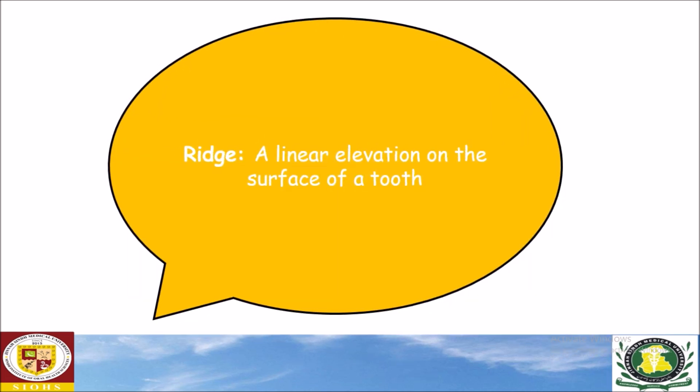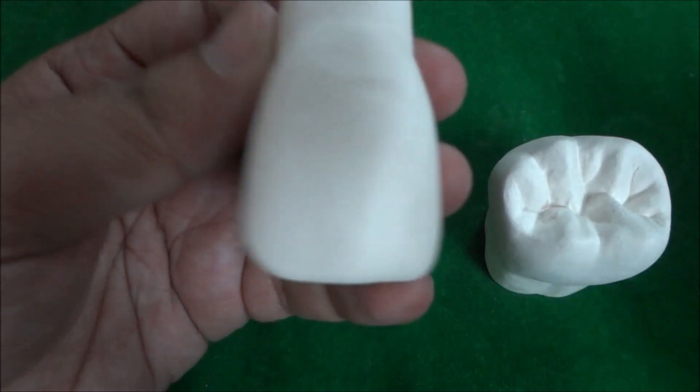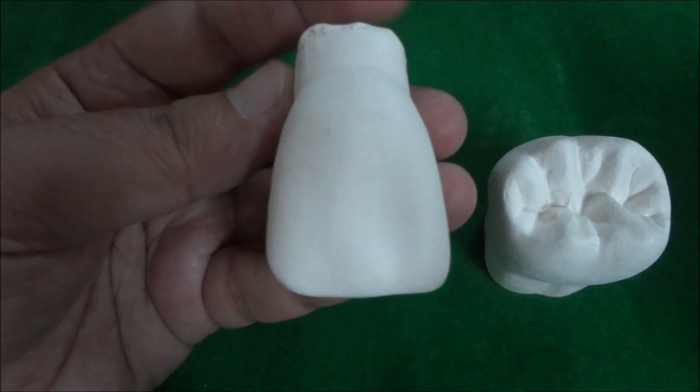A ridge is a linear elevation present on the surface of a tooth. There are numerous types of ridges. For example, marginal ridges are present on the mesial and distal margins of the lingual surface of anterior teeth and the occlusal surface of posterior teeth.